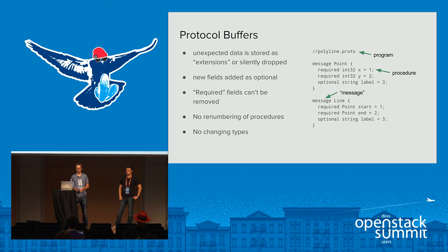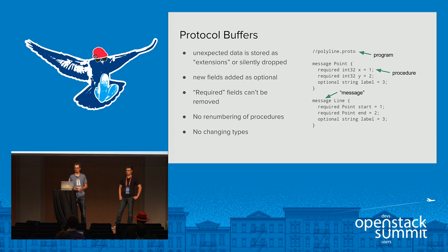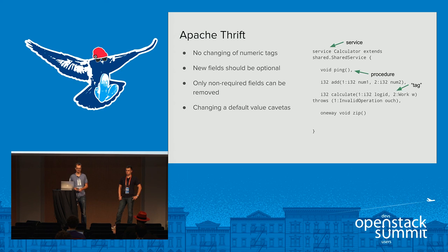Renumbering could break existing stored data, and you also shouldn't change the way that any given field is stored, though this can be very case-by-case. Another solution is Apache Thrift from Facebook — it's pretty similar to Protocol Buffers in that it doesn't have explicit versioning.